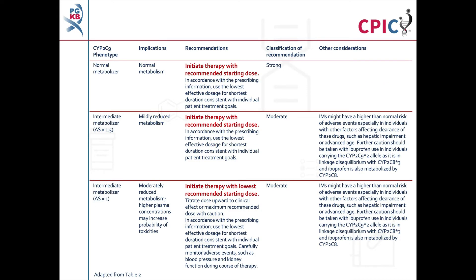These are the CYP2C9 dosing recommendations for celecoxib, flurbiprofen, ibuprofen, and lornoxicam, as shown in Table 2 of the guideline. Patients with a CYP2C9 normal metabolizer phenotype will have normal metabolism of NSAIDs and can begin NSAID therapy using the recommended starting dose. This is a strong recommendation.